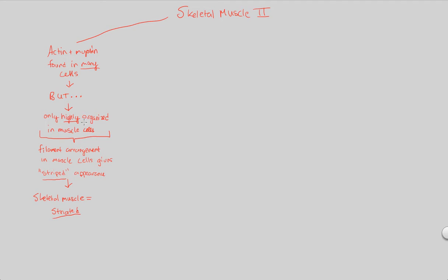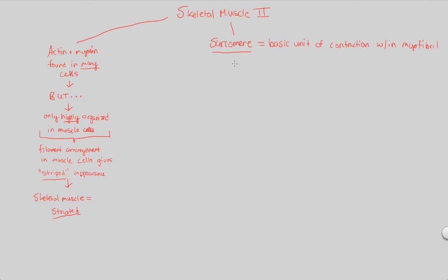Now let's look at this organization by examining another sub-substructure within skeletal muscles: the sarcomere. This is the next structure within skeletal muscle, and the sarcomere is specifically the basic unit of contraction. It is found within the myofibril. The myofibril arranges actin and myosin in what is known as a sarcomere arrangement, shown at the bottom of figure 50.26, giving you that striated appearance.